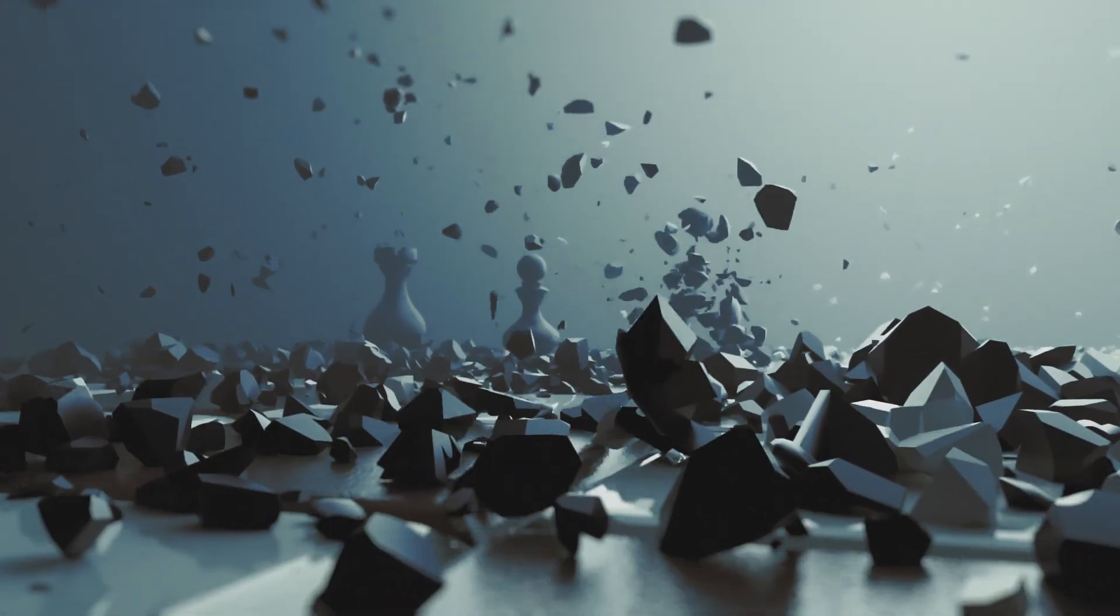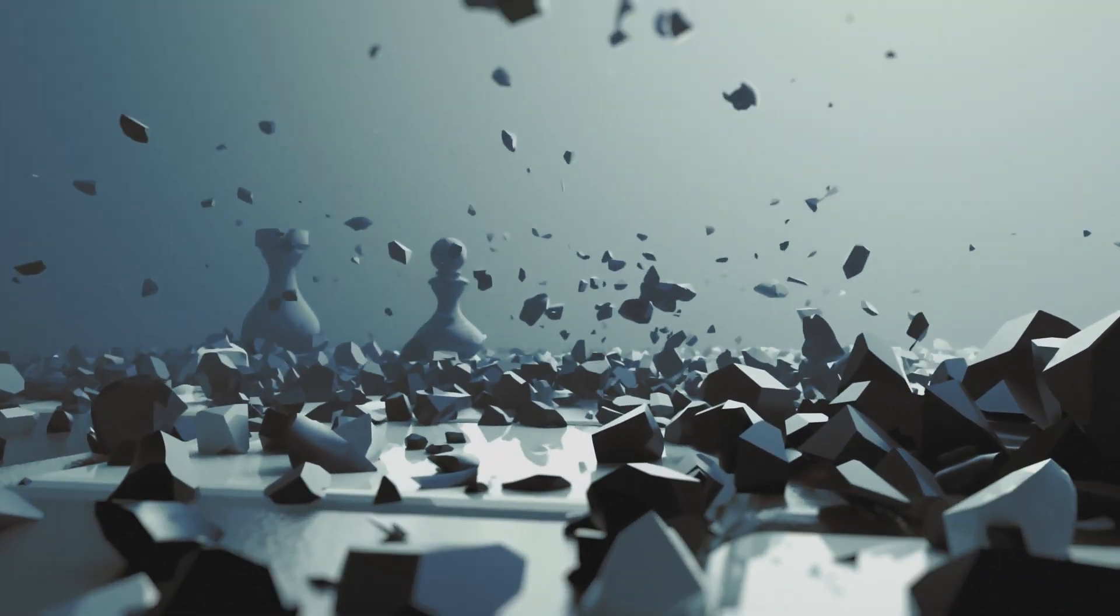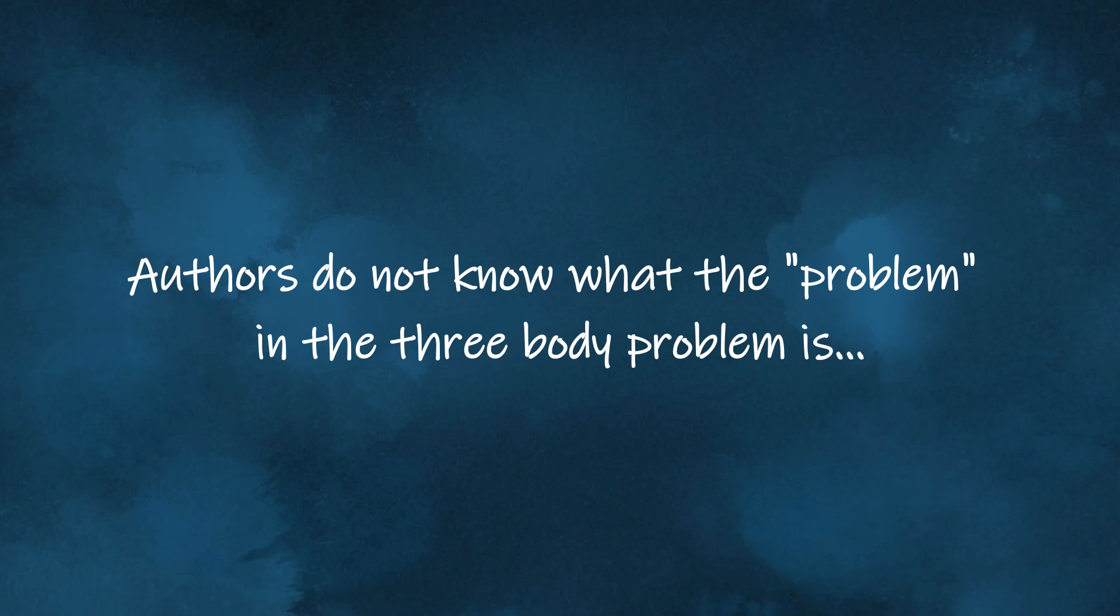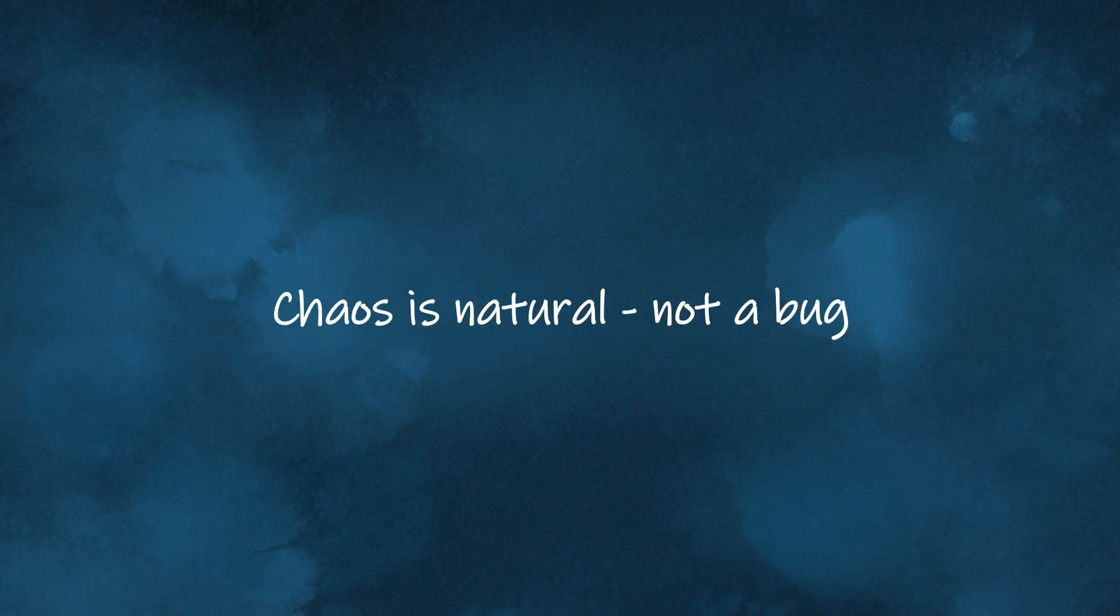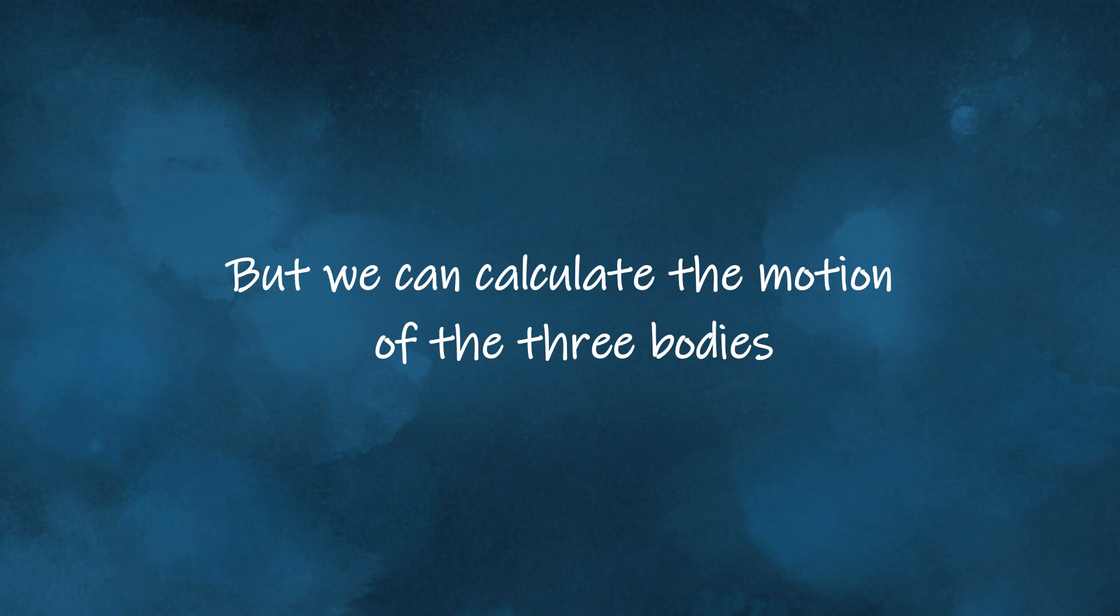If you restrict how the three bodies can move, you are not solving the three-body problem anymore. And honestly, it seems like the authors don't actually understand what the problem in the three-body problem really is. The issue with the three-body problem isn't that the motion is chaotic and we just don't know how to stabilize it. Chaos is an inherent feature of the system. You can't remove it, because that's simply how nature works. The real challenge is that there is no general closed-form solution, no single neat formula built from a finite combination of standard mathematical operations that can predict the motion of the three bodies for all possible initial conditions.